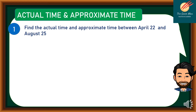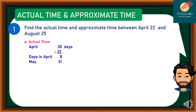Let's consider problem number one. Find the Actual Time and Approximate Time between April 22 and August 25. For the Actual Time: April has 30 days minus 22 days, so we have only 8 days in April. Then we add May 31, June 30, July 31, August 25. So we have 125 days in all for Actual Time.